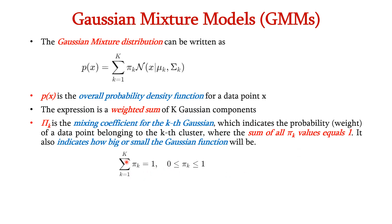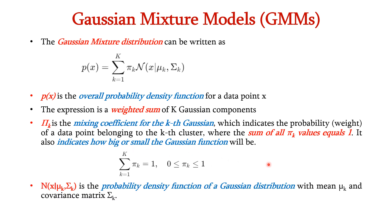The sum of all mixing coefficients equals 1: summation from k=1 to K of pi_k equals 1, meaning each pi_k ranges from 0 to 1. This function also indicates how large or small each Gaussian component will be. The normal distribution term is the probability density function of a Gaussian with mean mu_k and covariance matrix sigma_k.